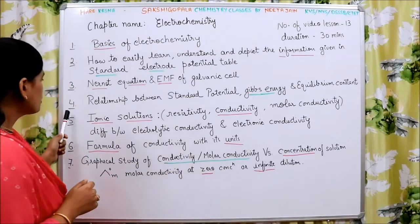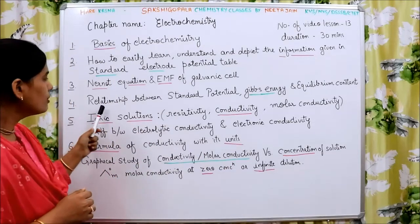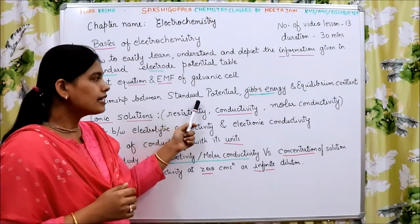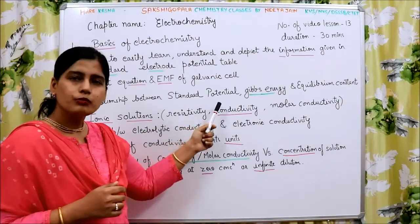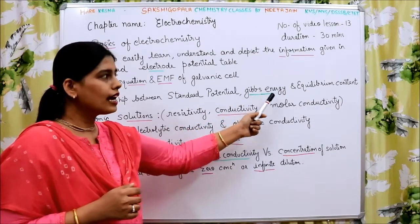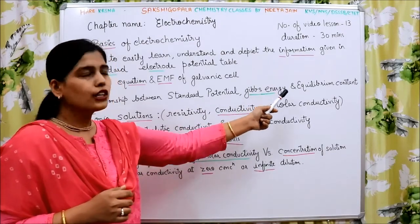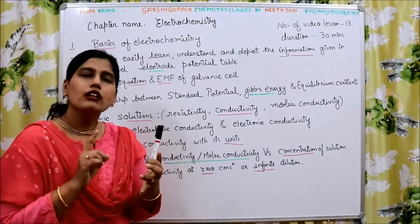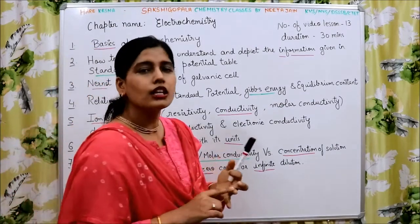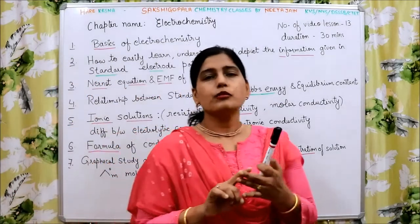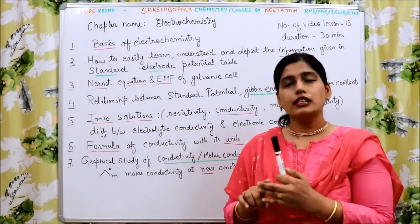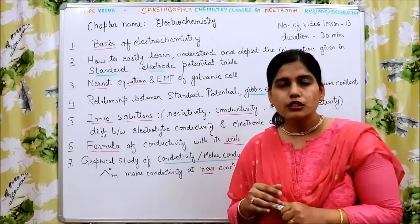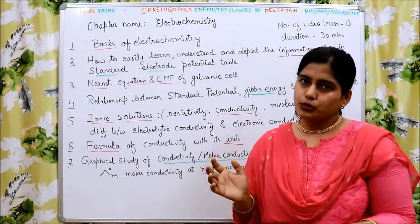Coming to the fourth module, we will deal with the relationship between standard potential, Gibbs energy, and equilibrium constant of the cell — the formulas that relate these three quantities.